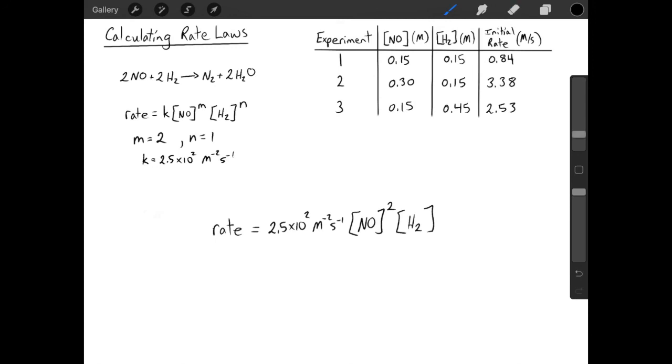The units for the rate constant are going to change depending on the overall order of a reaction. The overall order for the entire reaction is the sum of both of the individual orders.